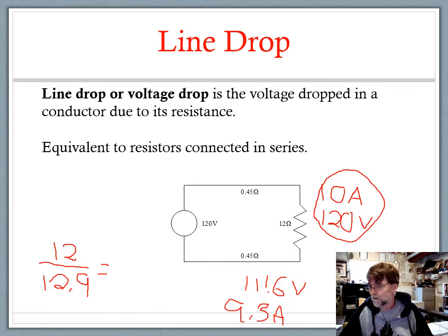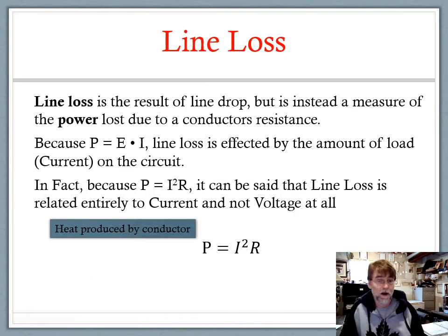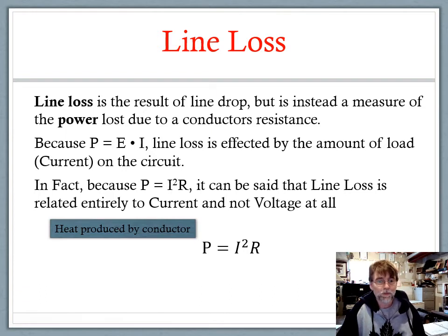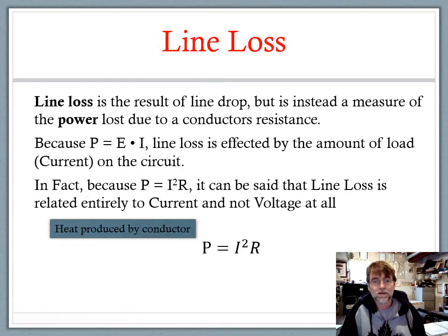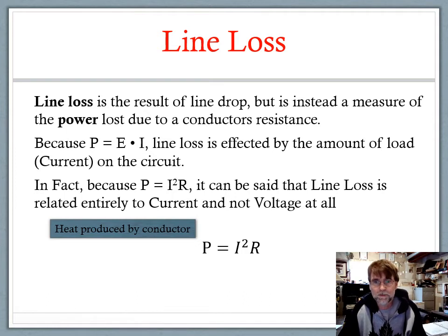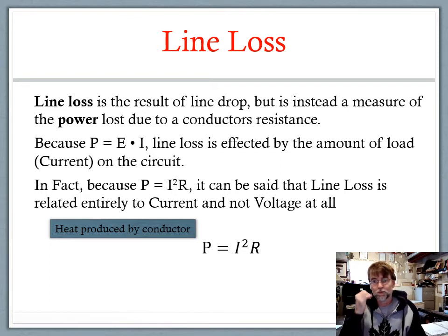Line loss is the result of voltage drop, but it is a measure of power. Because power considers both voltage and current, the amount of current is a really big deal. We can look at the power equation P equals I squared R — this is a power equation we haven't focused on much. When we talk about line loss and efficiency, P equals I squared R becomes the main factor. It can be said that line loss is related entirely to current and not voltage at all.